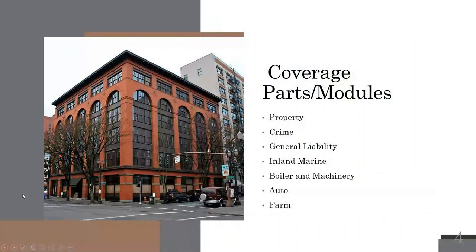These are the different coverage parts you can get on your commercial package policy. Typically we start off with property coverage — if you own a building, you definitely want coverage for it. Instead of saying theft coverage in the business world, we call it crime coverage, similar to theft on your home policy except for a business. You have general liability, which is optional for a business. You might see it as GL or CGL — commercial general liability.